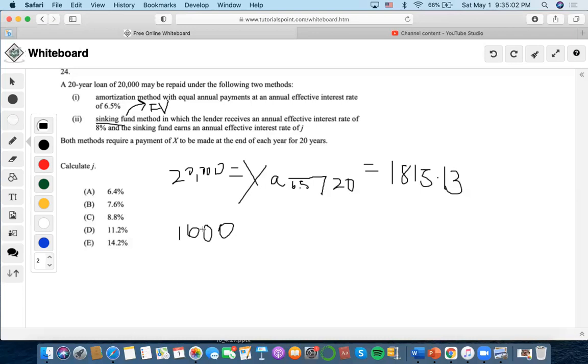that means we have to use that $1,600 to pay off the payments we have to make every year to pay off this loan. So that would mean for every year, we would subtract both of these. So what we need to pay out of $1,815.13, and what the sinking fund provides, is that amount subtracted by $1,600.